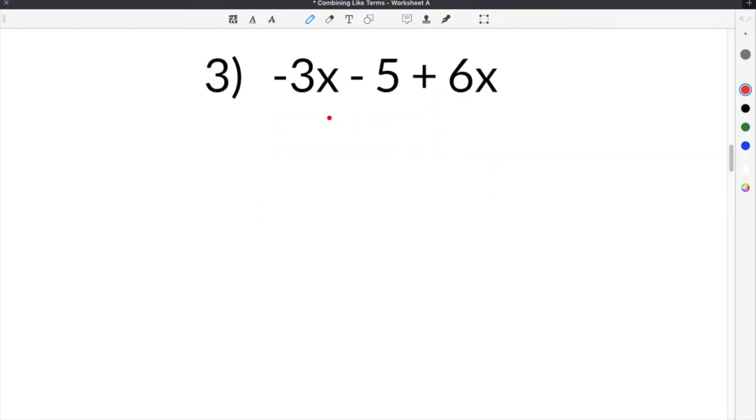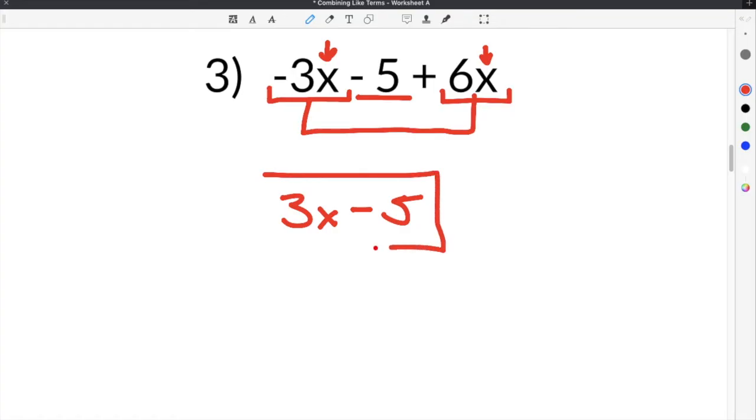Jumping down to number 3, we have negative 3x minus 5 plus 6x. In this case, we have like terms, but they are the terms that have the x's. So this negative 3x and this 6x are like terms because they both have the variable combination of the x. Now this minus 5 in this case is not a like term with anything else because there is no other constant in this expression to combine it with. So what we are going to do is we are going to combine negative 3x plus 6x and negative 3x plus 6x is positive 3x. And then this minus 5 or this negative 5 comes straight down. So our solution is 3x minus 5.